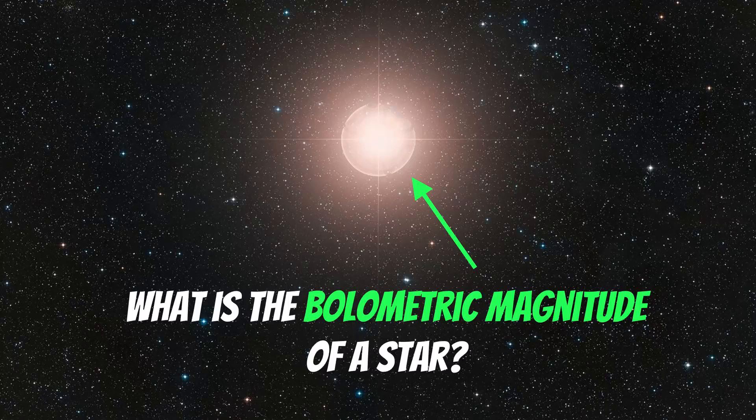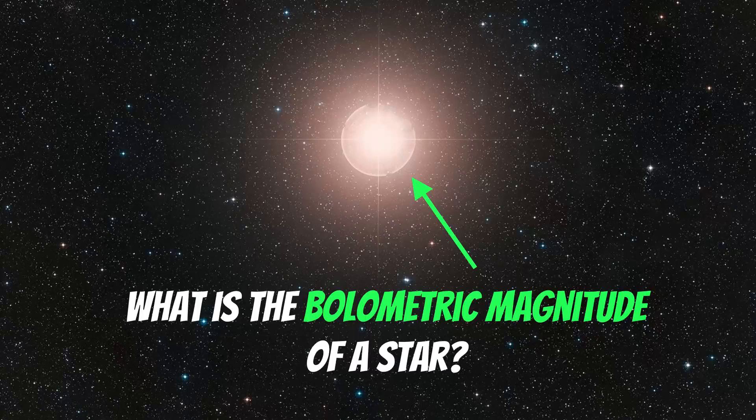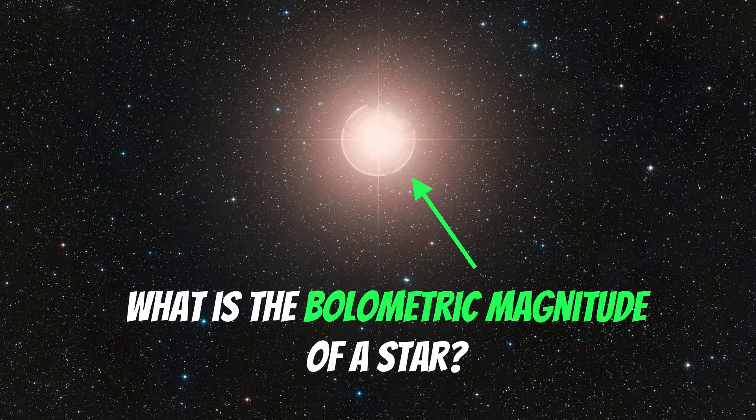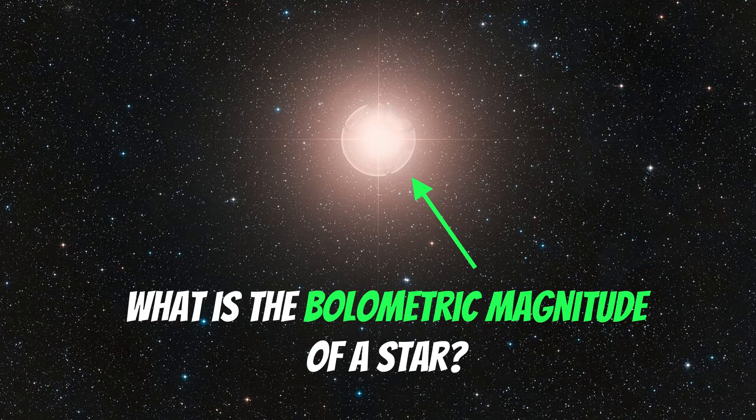If you've ever done any work looking at the magnitude of a star or trying to find how bright a star is compared to others, you may have come across something known as the apparent magnitude or absolute magnitude, but also bolometric magnitude. In this video we're going to have a look at what that is and how that differs from the apparent and absolute magnitude of a star.